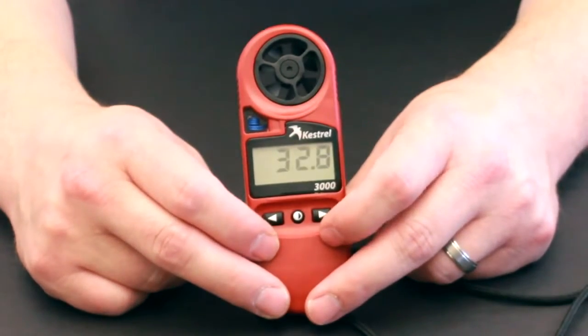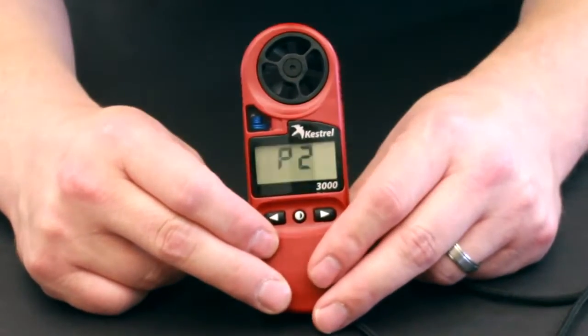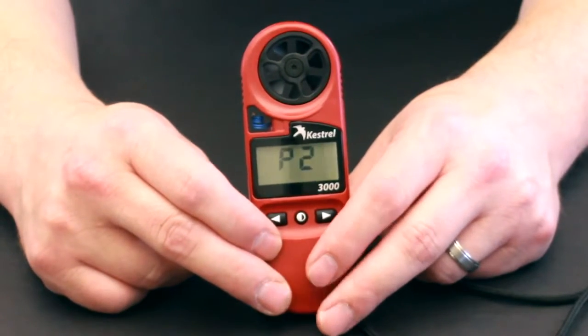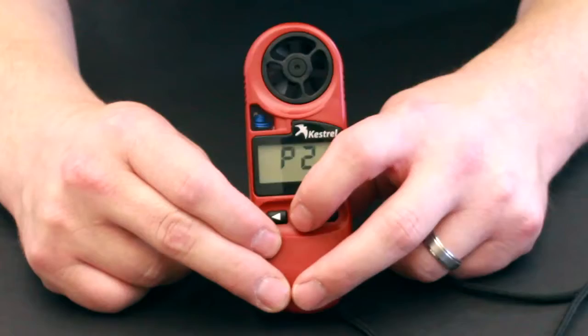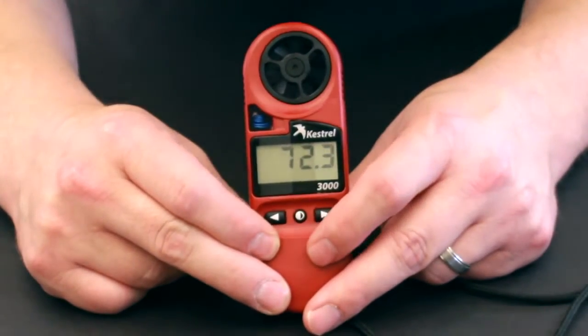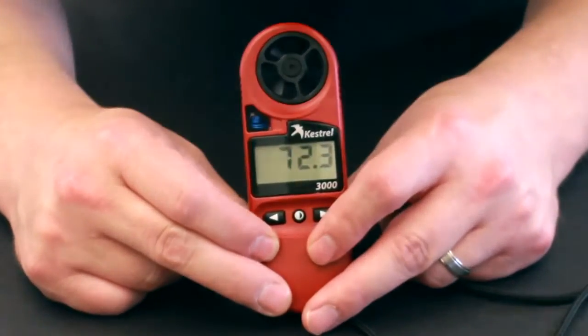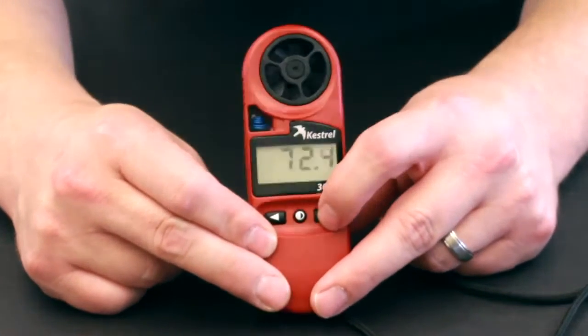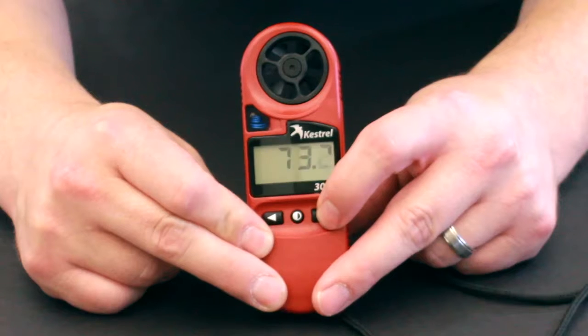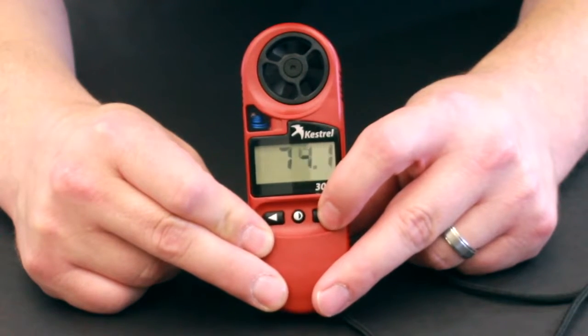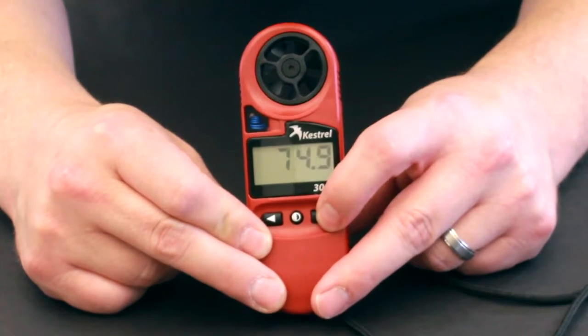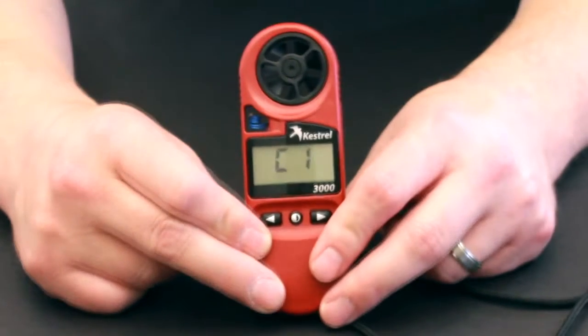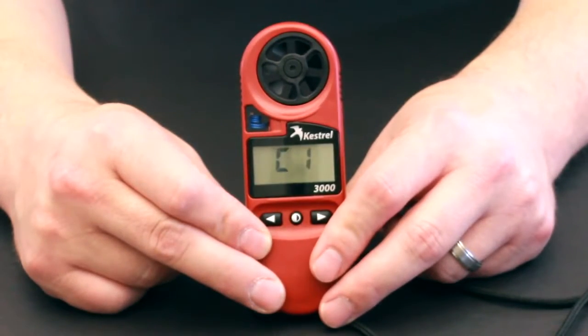Once we have that, we'll hit the center button to move to the second value, which is P2. This is going to be the value of the sodium chloride chamber. Let's hit the center button, and it says 72.3. We want this to be 75.3, as noted in the instructions, so let's increase this until we get to 75.3. Now, we'll hit the center button. Now, we're ready to start the humidity calibration.